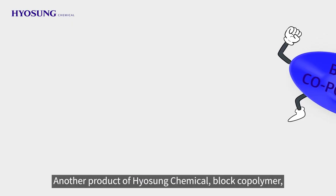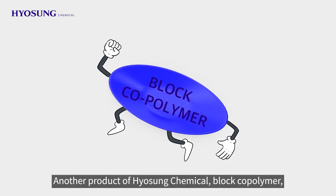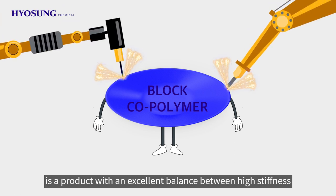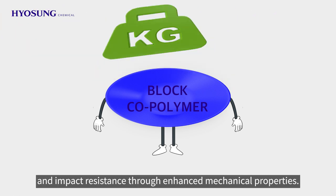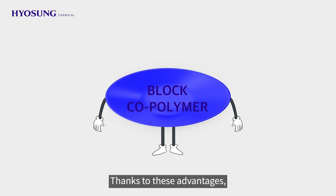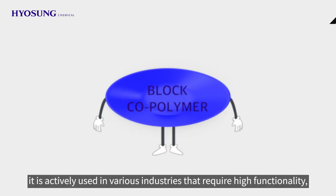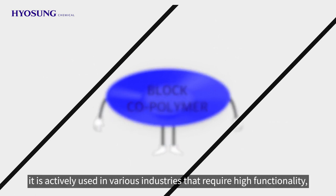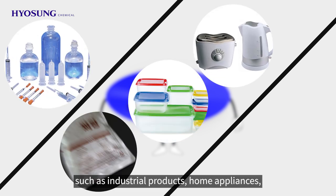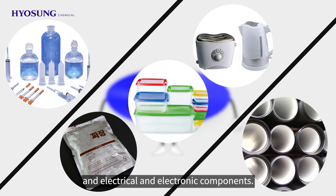Another product of Hyosung Chemical, Block Copolymer, is a product with an excellent balance between high stiffness and impact resistance through enhanced mechanical properties. Thanks to these advantages, it is actively used in various industries that require high functionality, such as industrial products, home appliances, and electrical and electronic components.